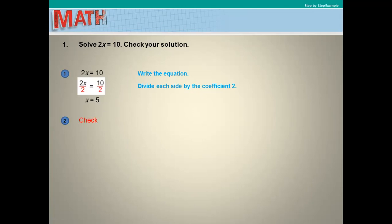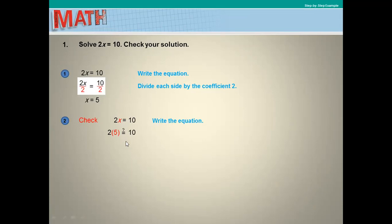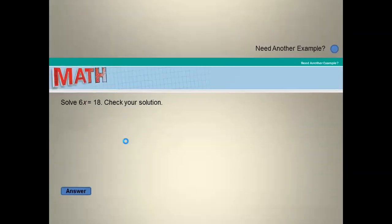To check the answer, replace x with 5 in the equation: 2x equals 10 becomes 2 times 5, which is 10. The answer is right because the equation states 2x equals 10, and this sentence is true.